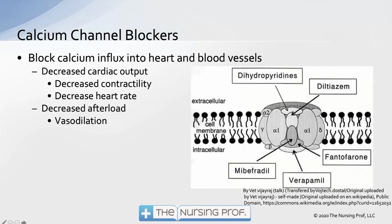Calcium channel blockers block that calcium influx — they close off the channel so calcium cannot move from outside to inside the cell. This has a couple of effects: it decreases cardiac output by decreasing contractility and decreasing heart rate, slowing the heart down.